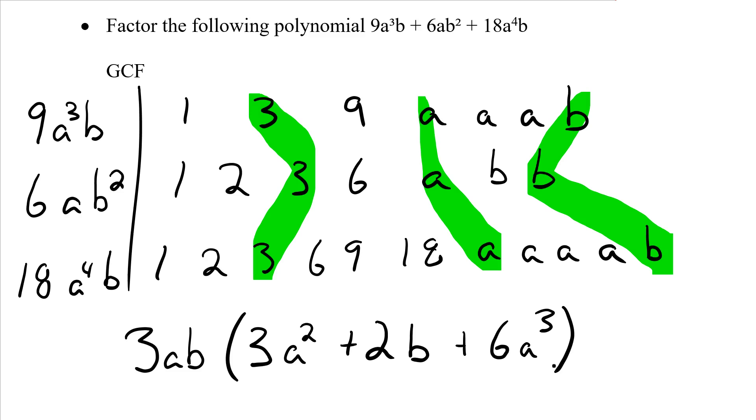Close off my brackets. So when I factor my polynomial, I get 3ab as my factor, leaving with 3ab(3a² + 2b + 6a³).